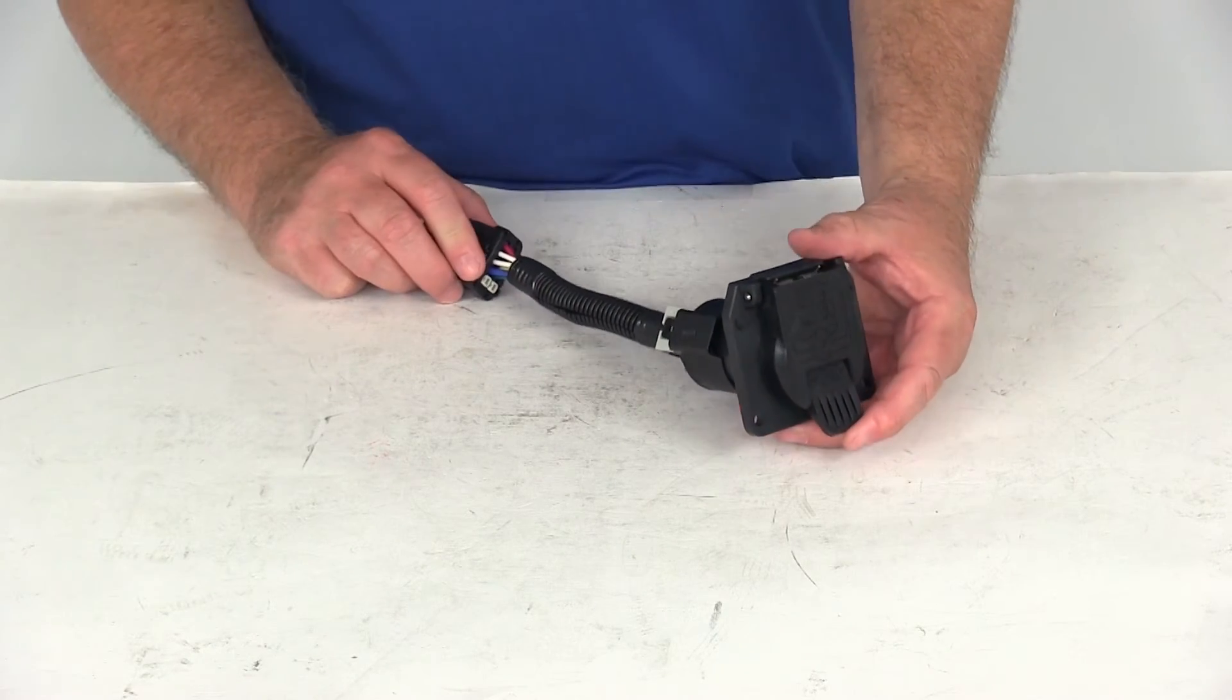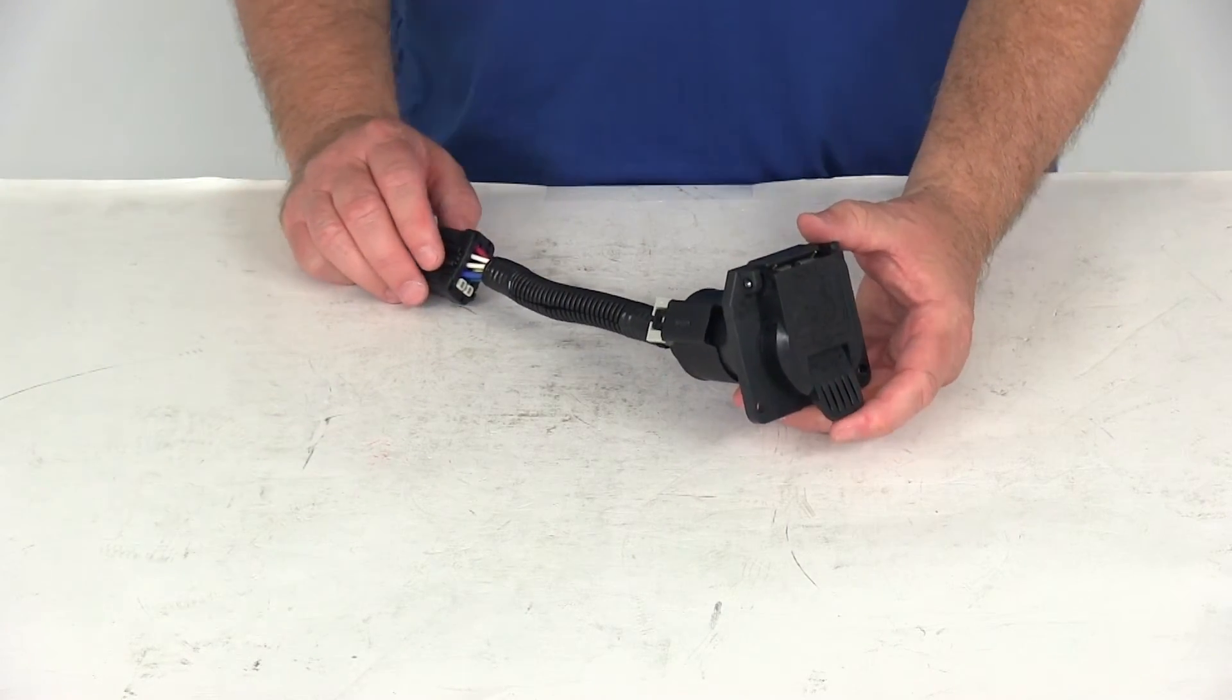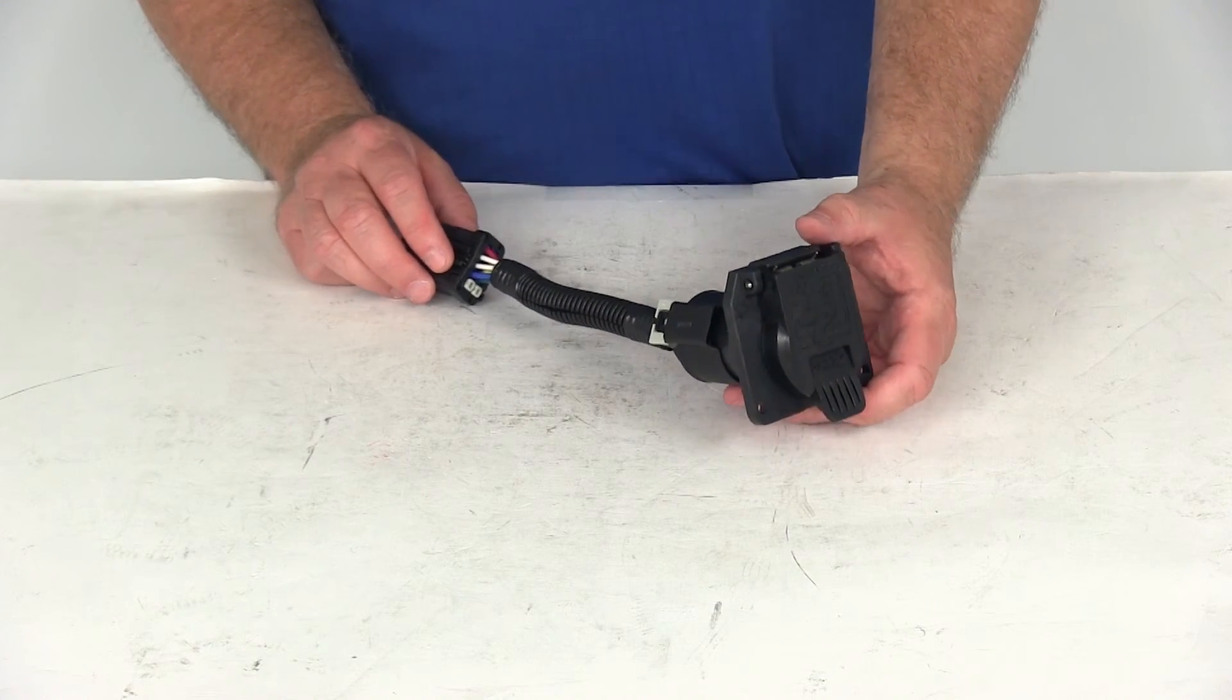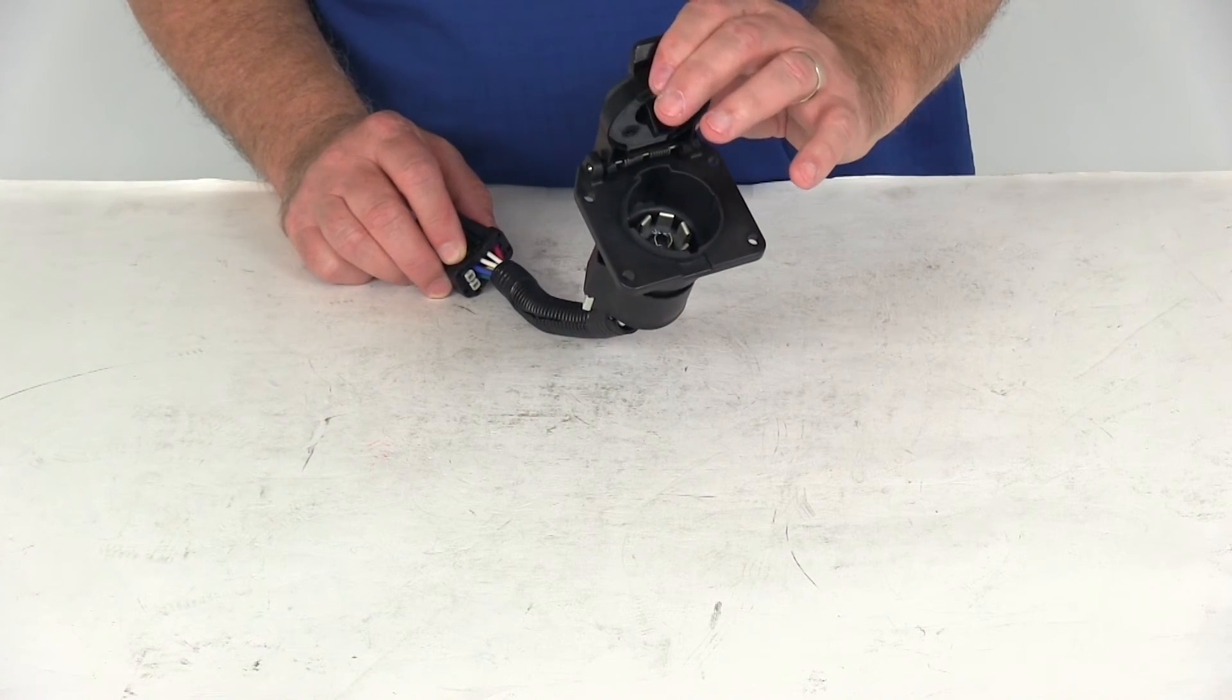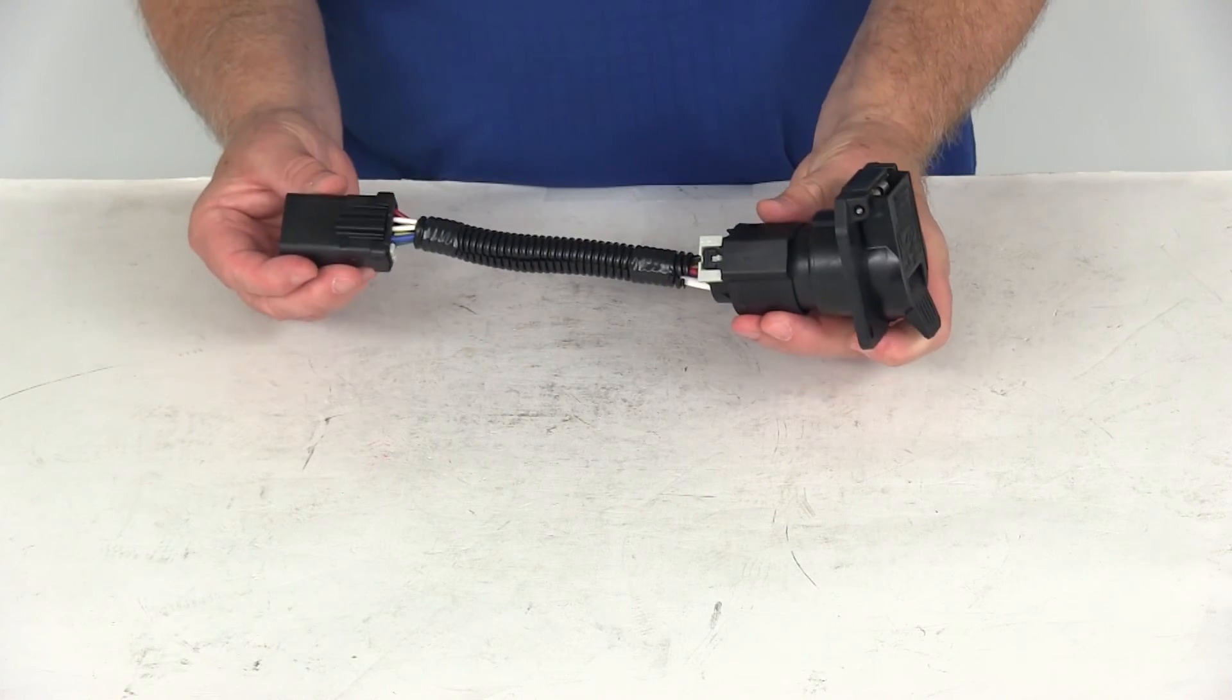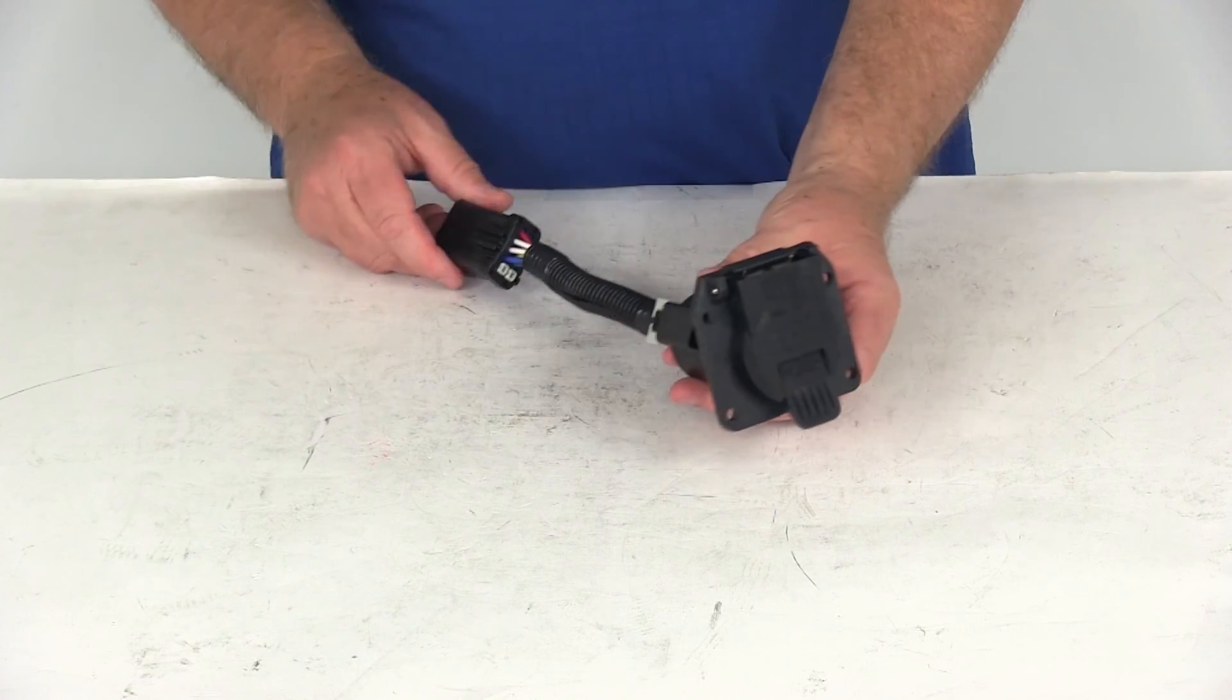That should do it for the review on part number PK-11893-11933, the Pollock 7-Way RV Style Trailer Connector Socket and the Dodge Chrysler OEM Plug Adapter. Thank you.